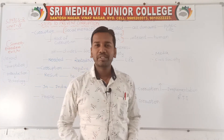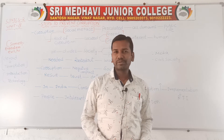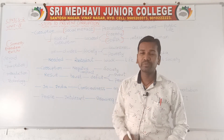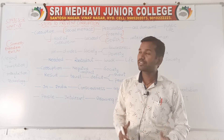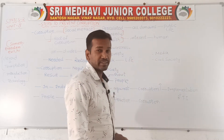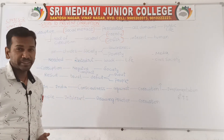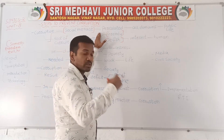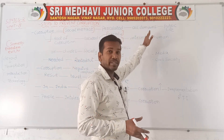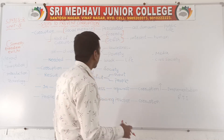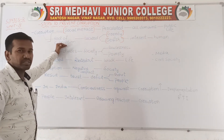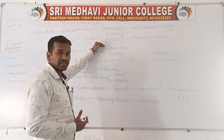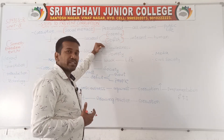Hello students, welcome back to the class. During the last class we discussed about the steps of prevention of corruption. Corruption is a social violence which is very harmful to society, and this social violence is slowly spreading towards territories mainly operated by the government in public life. The root cause of corruption, if you see, there are two important root causes: one is greediness and selfishness.